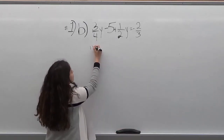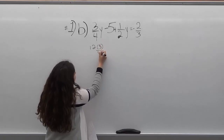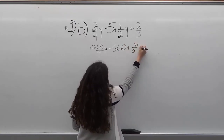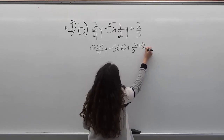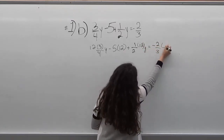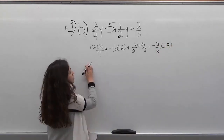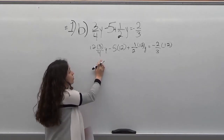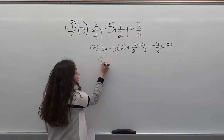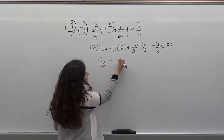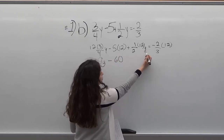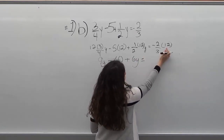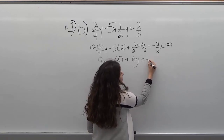So when we do that: 12 times 3 over 4 minus 5 times 12 plus 1 over 2 times 12y equals minus 2 over 3 times 12. So when you do that and reduce it: 12 divided by 4 is 3, so you're going to have 3 times 3 times y which is 9y, and then minus 60, and then 12 divided by 2 times y which is 6y, and then equals 12 divided by 3 which is 4, so you're going to have minus 2 times 4 which is minus 8.